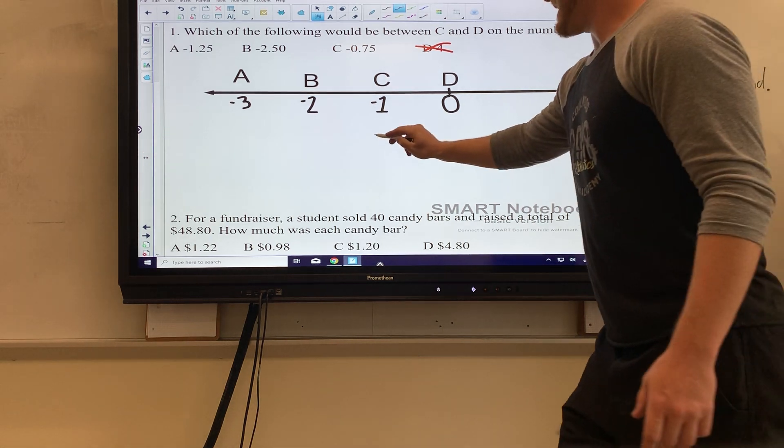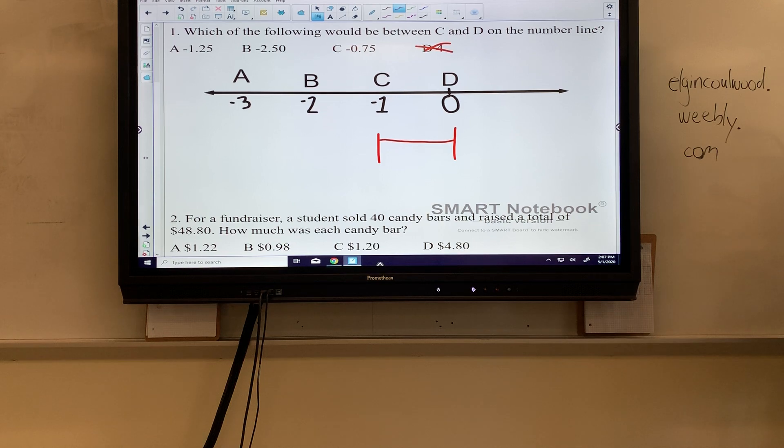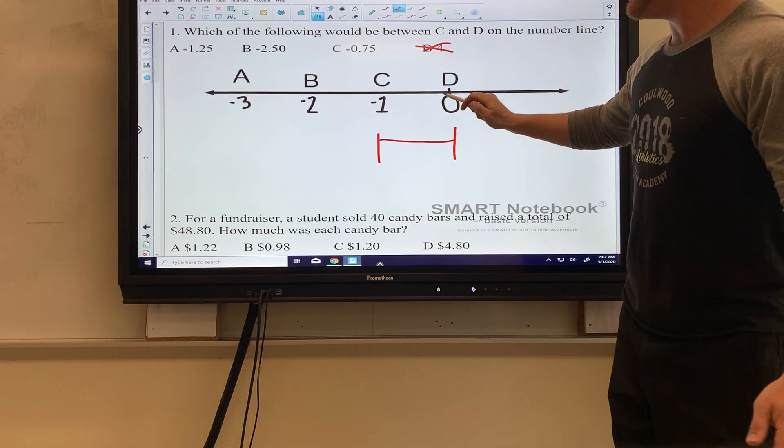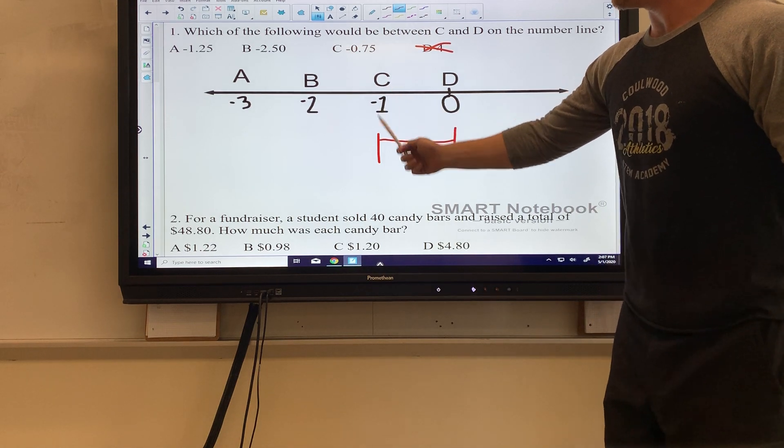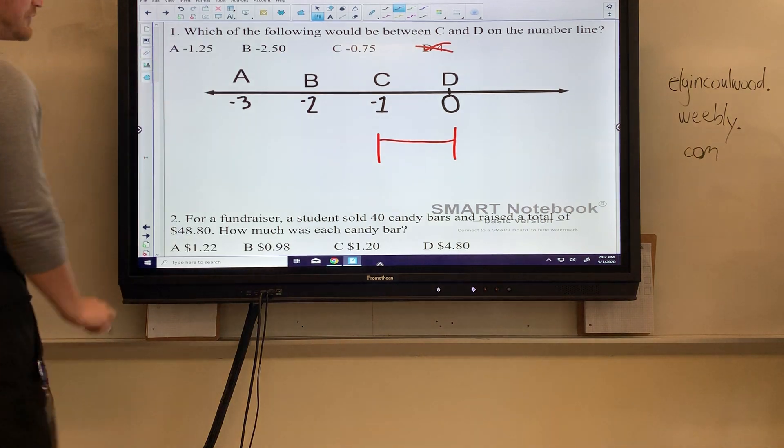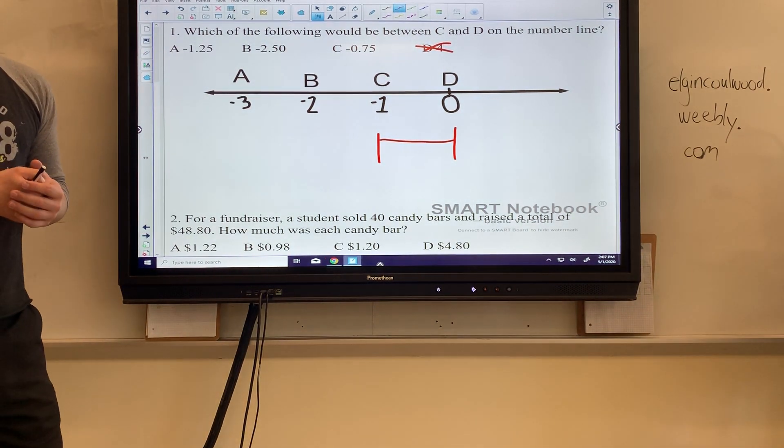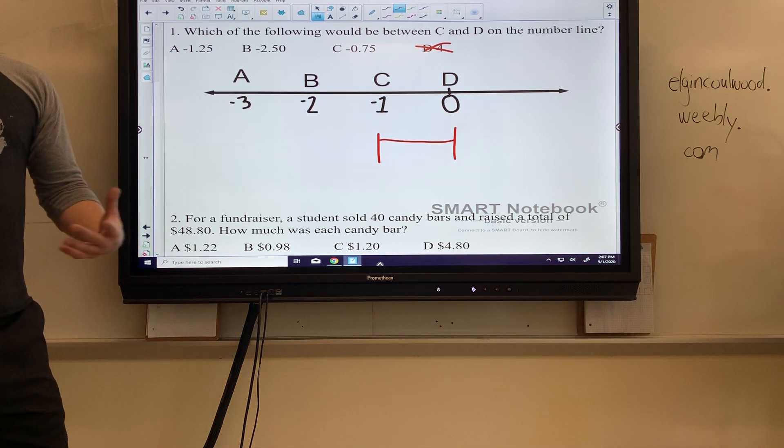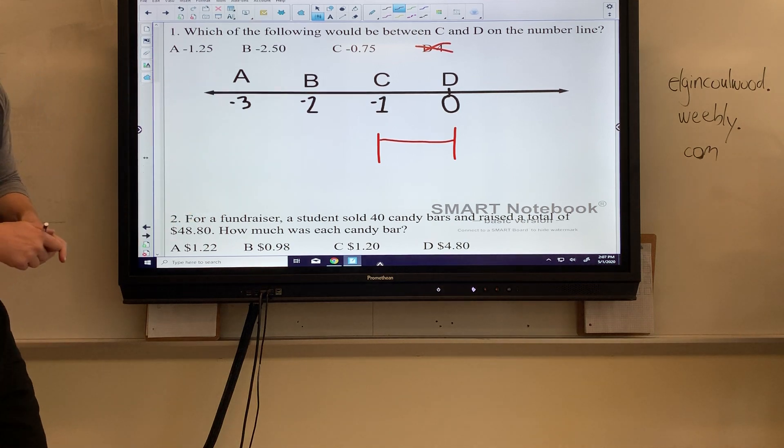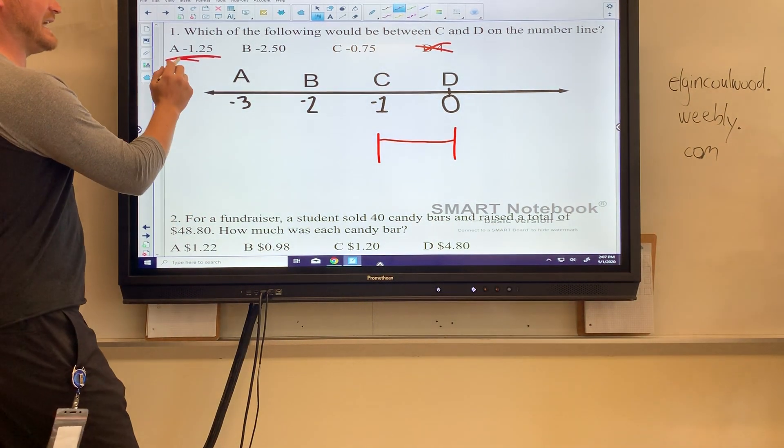Between C and D, it's got to be between negative 1 and 0. Since we're going to the left of 0, it's going to be a little less than 0 but a little greater than negative 1. If I'm looking at this first one, negative 1.25—if I think about positive numbers, 1.25 is going to be between 1 and 2. If you think about $1.25, you have more than $1 but less than $2.